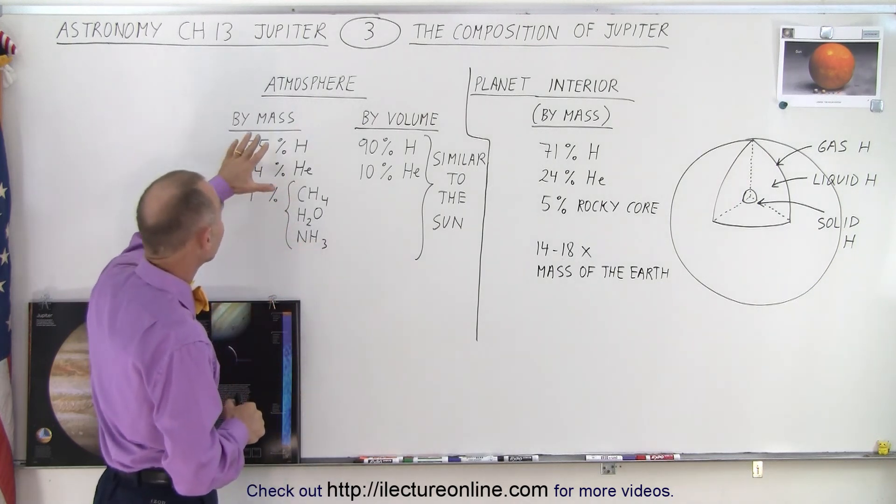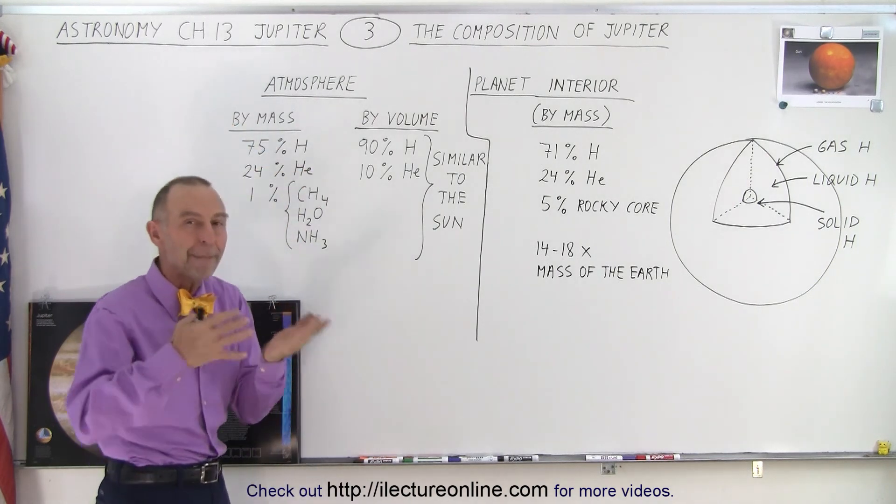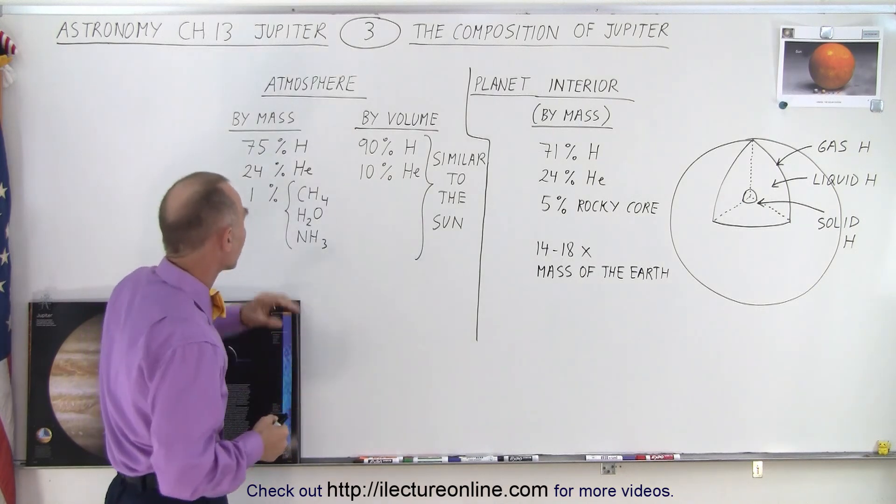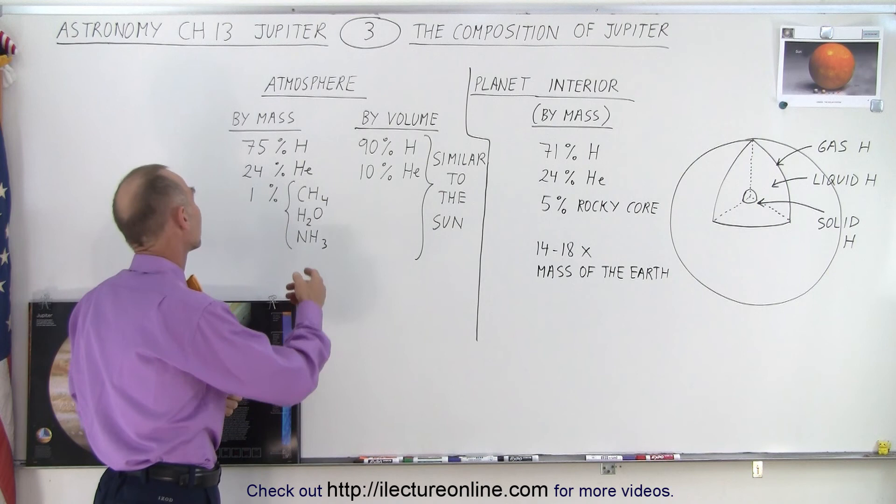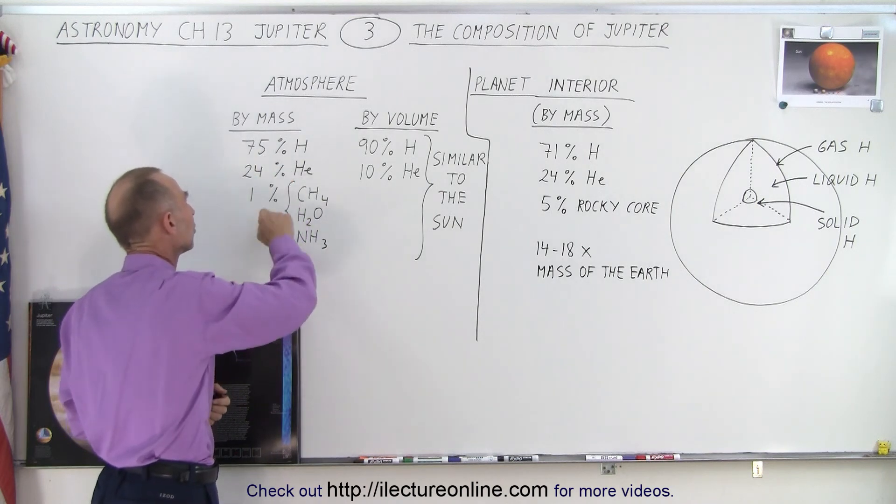We can look at it by mass or by volume. Typically, we look at it by mass. By mass, the atmosphere consists of 75% hydrogen and 24% helium.